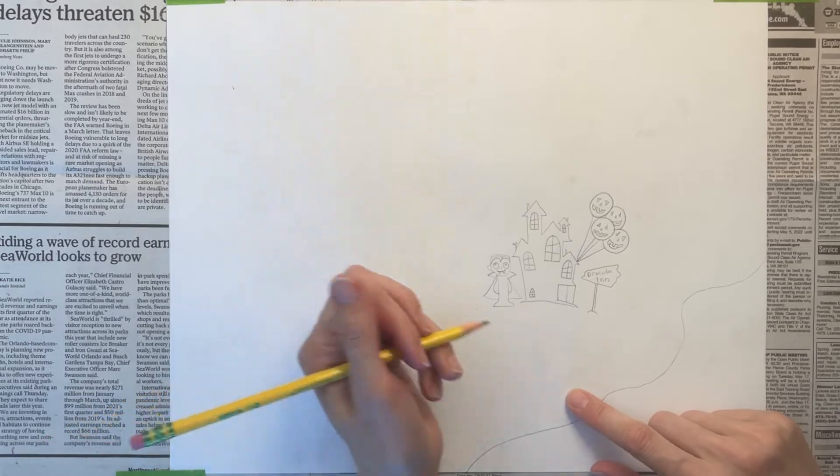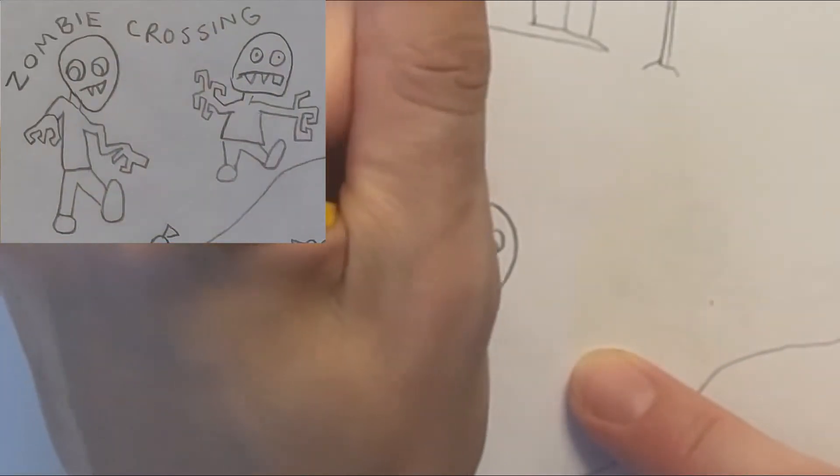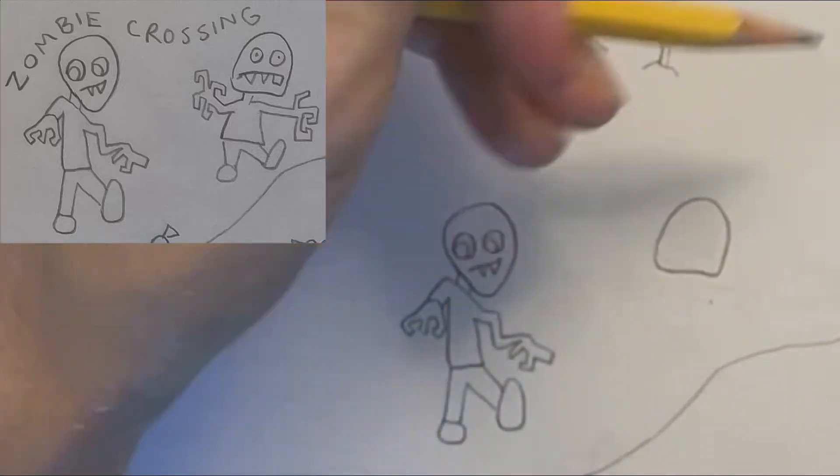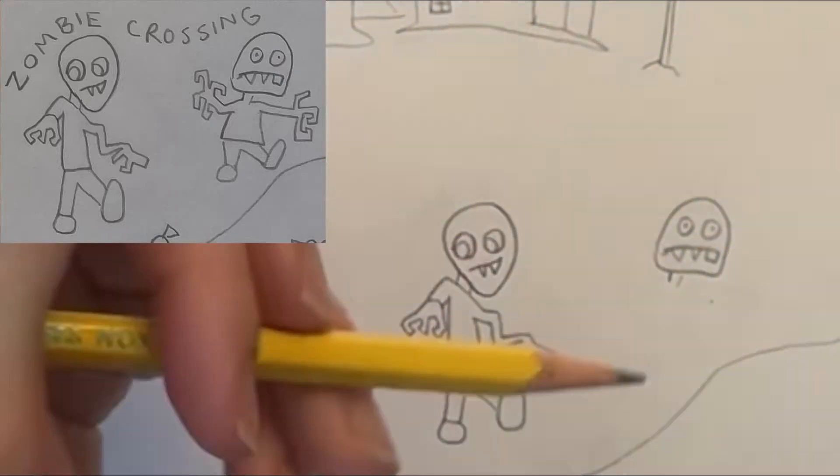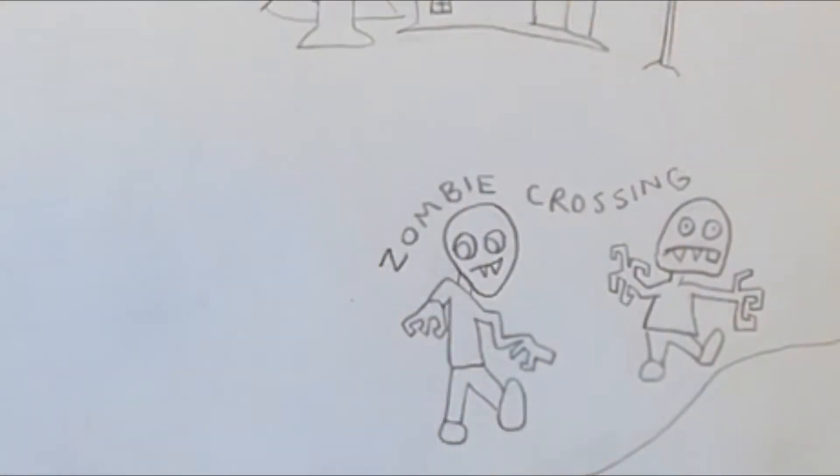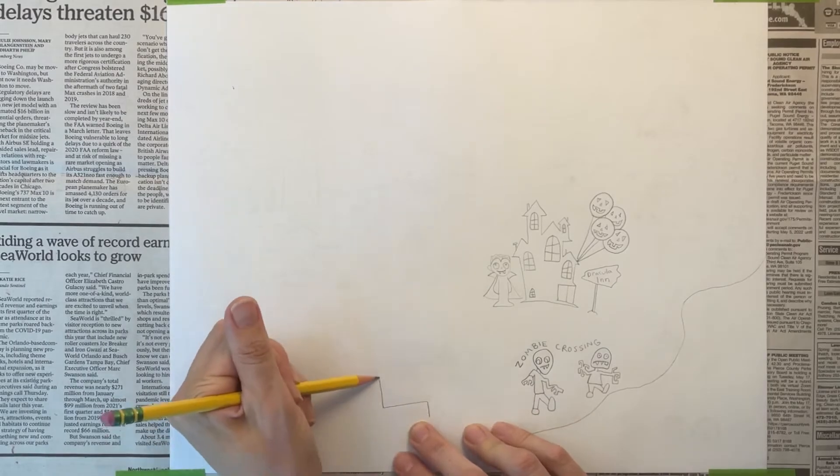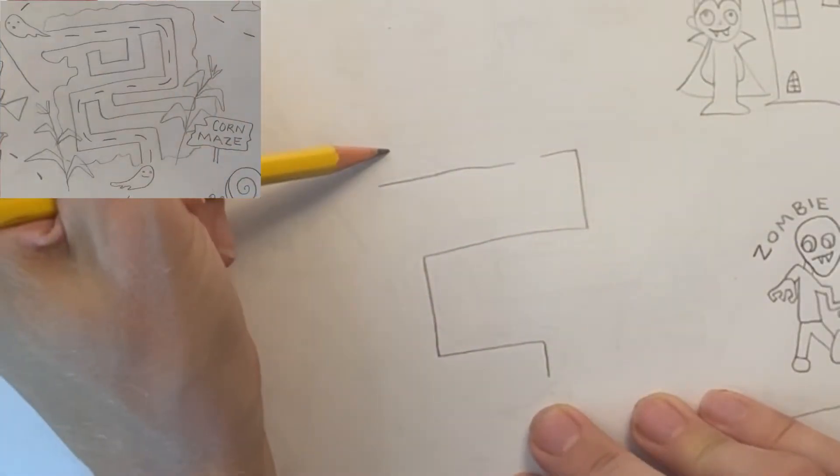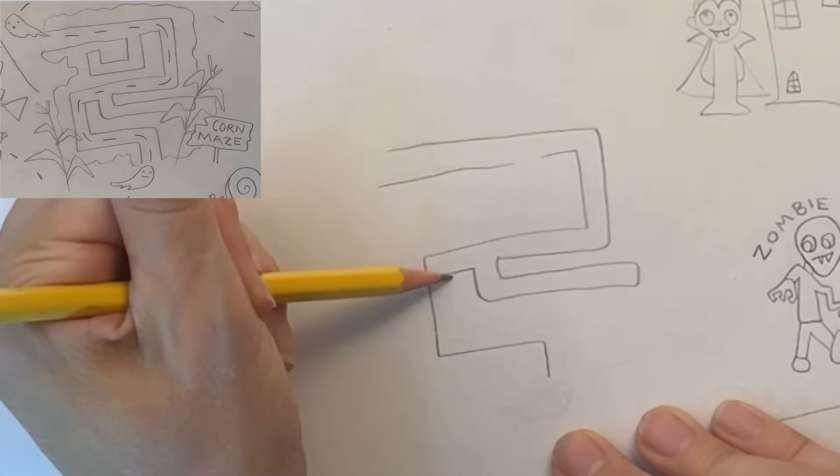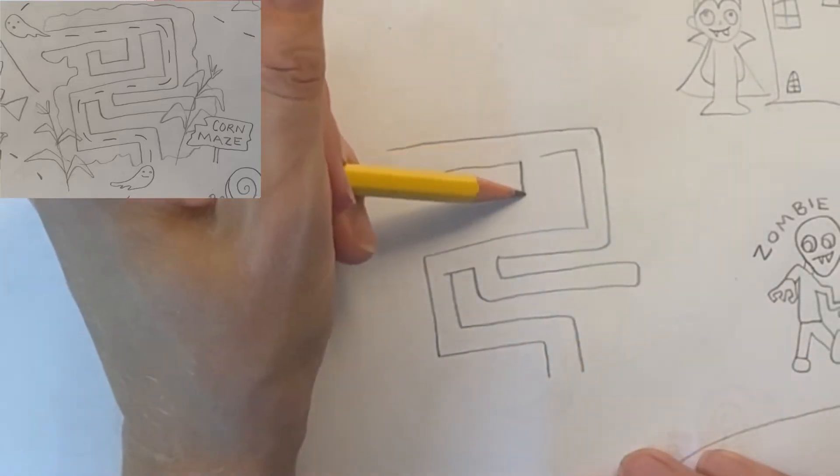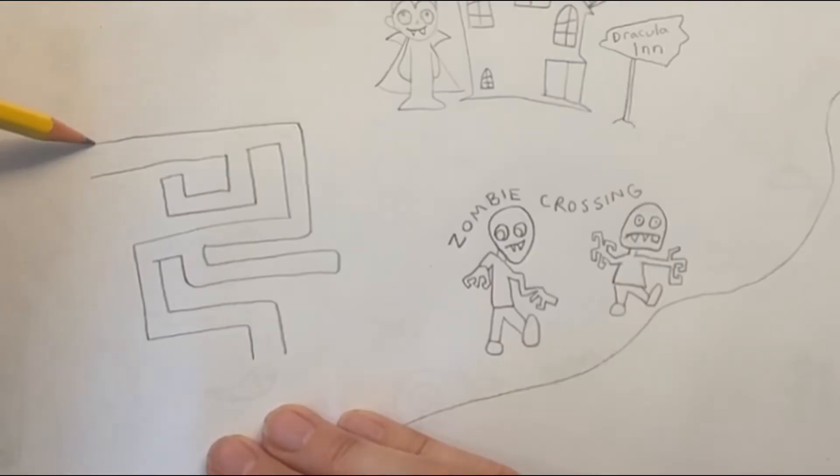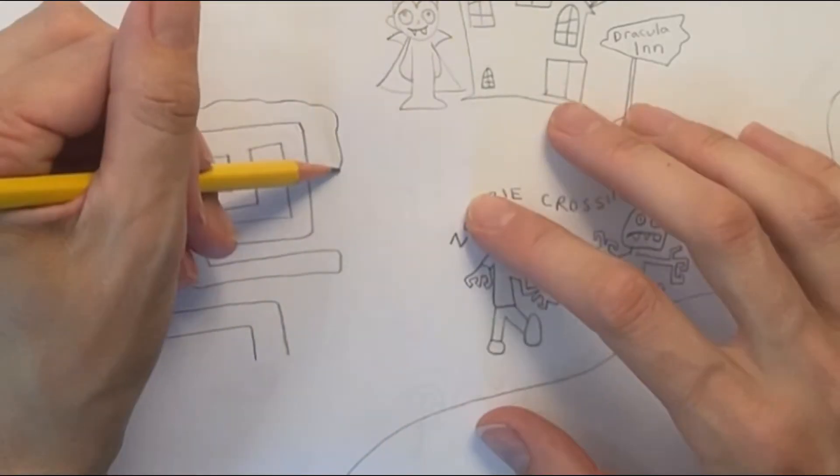Just south of Dracula Inn, I'm drawing a zombie crossing. This is where the zombies hang out. Feel free to pause or rewind this video at any time if you want more time to look at the drawings. Now I'm going to attempt to create an aerial view of a corn maze. You can do this by drawing a simple maze that includes a couple dead ends and a start and finish.